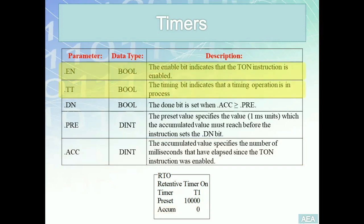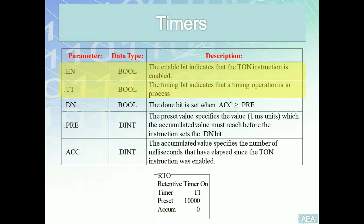The three Boolean parameters are the enable bit, timer timing, and done bit. The enable bit indicates whether the timer on instruction is enabled — the rung-in condition that triggers the timer specifies its state. If the rung-in condition is true, the enable bit is true; if false, it's false. The timer timing bit indicates that the timing operation is in process — when the timer is active and the accumulator is still less than the preset value, timer timing is on. The done bit is the flag indicating that the accumulator has reached the preset value.